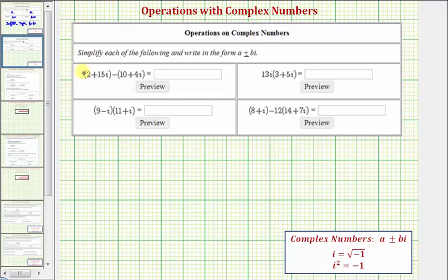So we can clear the parentheses here by distributing one, and because of this subtraction, we can clear the parentheses by distributing a negative one. So that would give us 2 plus 15i, and then minus 10, minus 4i.